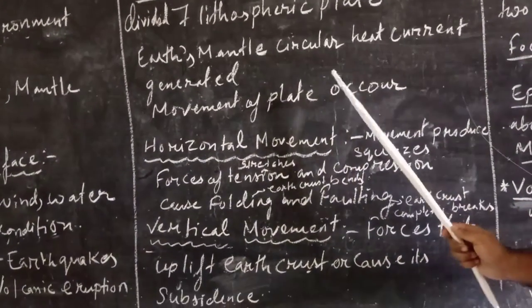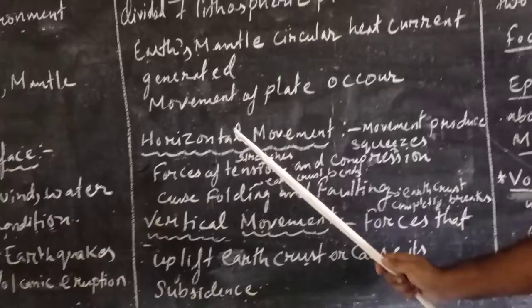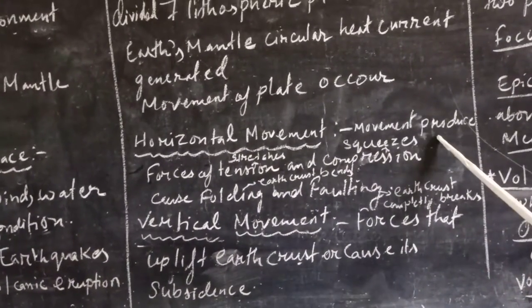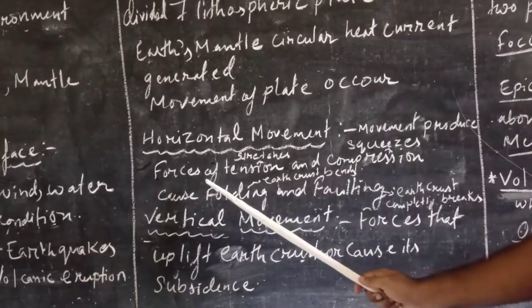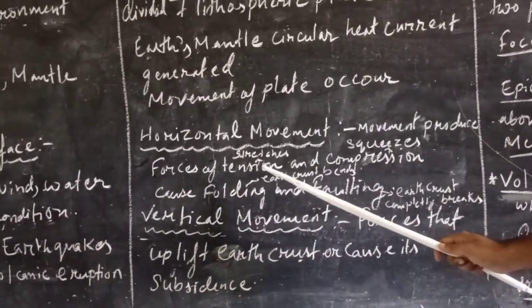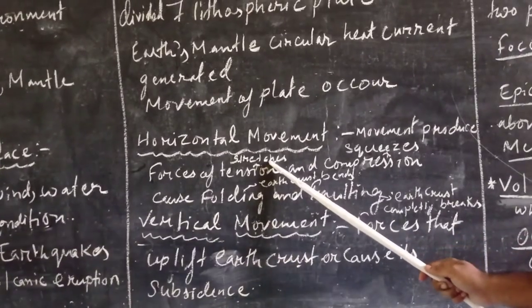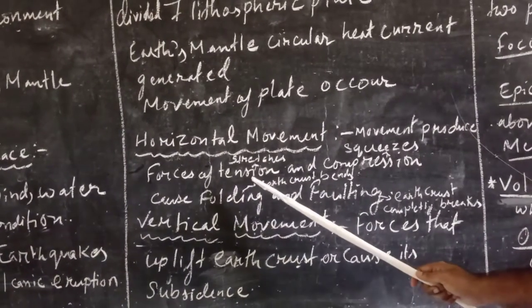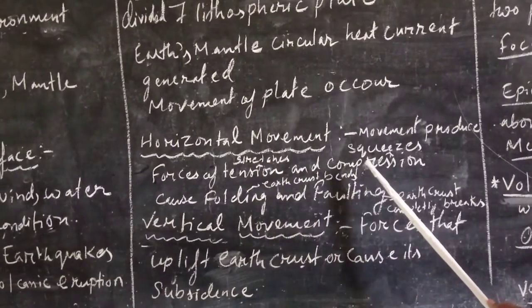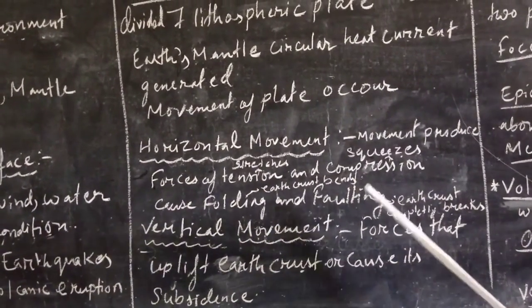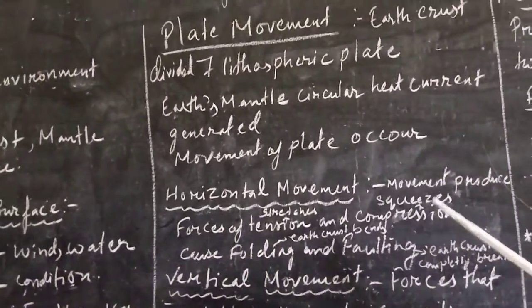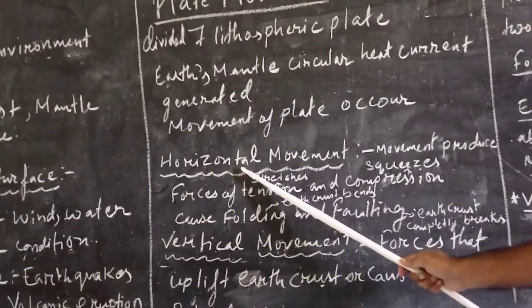What are the movements? Let us look. First of all, horizontal movement. What is this horizontal movement? This movement produces forces of tension and compression. What is tension? Tension means stretching, as we stretch elastic. And squeeze, I give one example of squeezing lemon. That is compression.